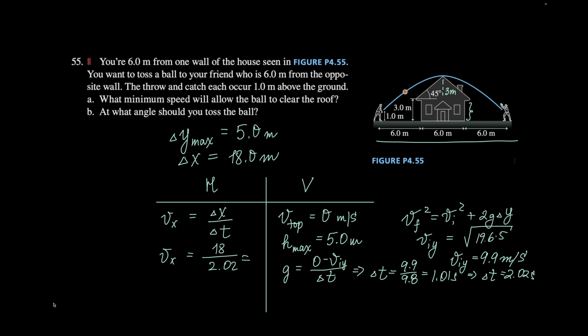That's 8.9 meters per second. And then since they want the speed, we'll just do Pythagorean, which is 8.9 squared plus 9.9 squared.